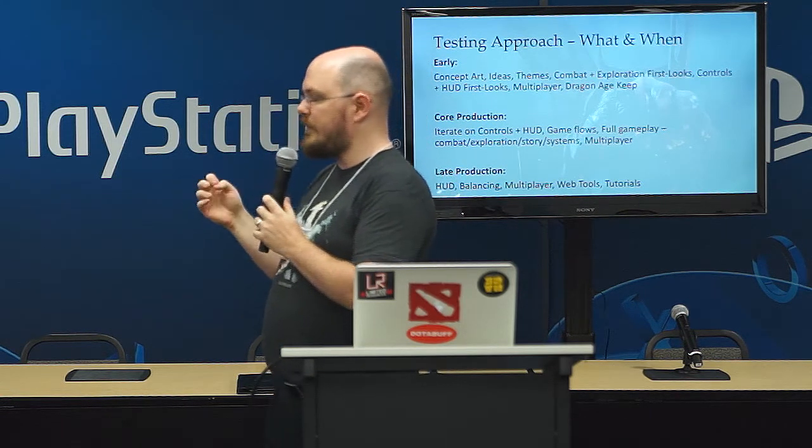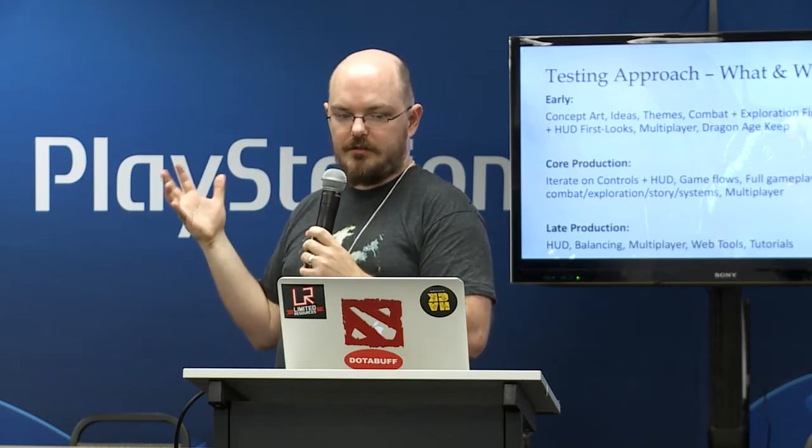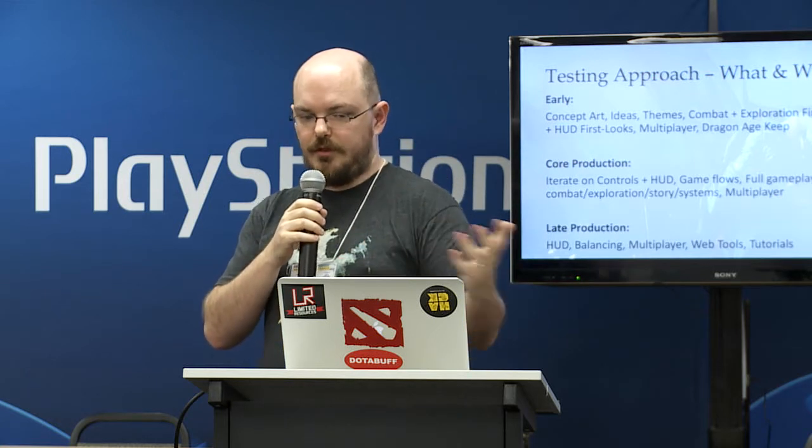The testing approach — kind of what and when. Early on, we looked at concept art, ideas, and themes. We did our combat and exploration first looks, Frostbite 3 got stood up really early. We did control and HUD first looks. We looked at multiplayer pretty much through the entire course of the project, and also some Dragon Age Keep stuff. Once we got into core production, iterating on controls and the HUD was really important. We looked at game flows — how people progressed through the game — and started mixing all the elements: combat, exploration, story, and systems. Late production, we did final passes on the HUD, looked at balancing, and as soon as tutorials came in, I did nothing else but look at tutorials.